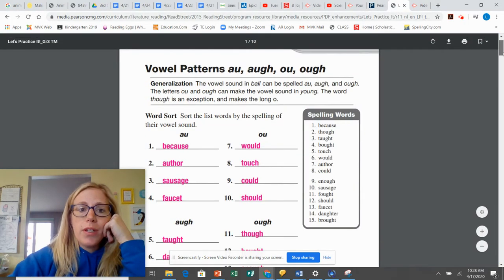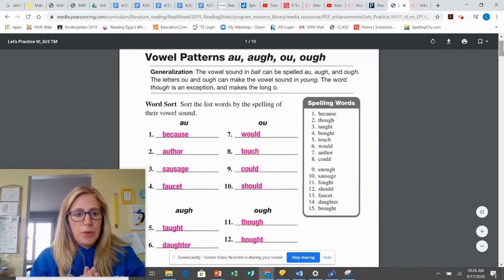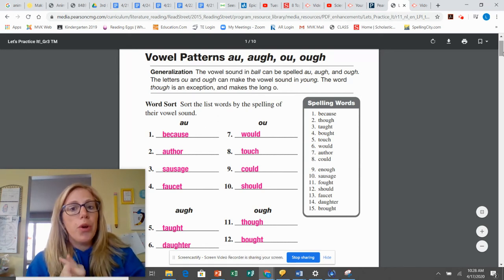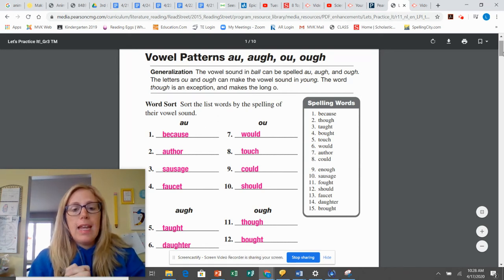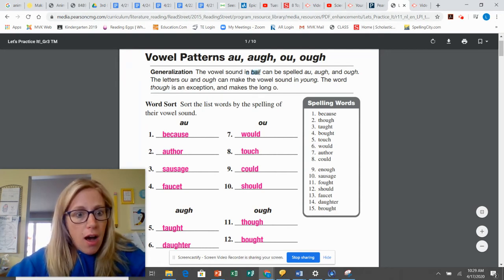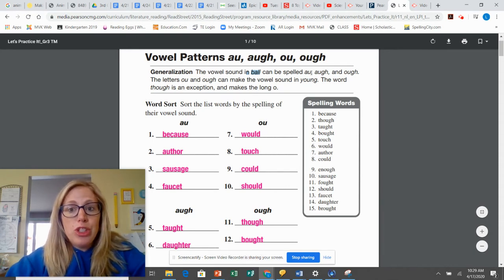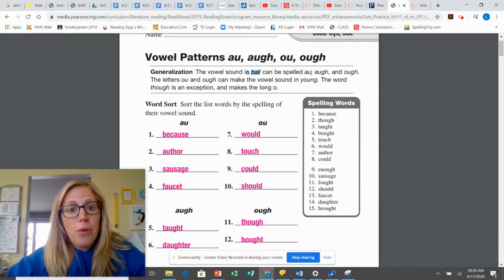So these are the words this week. We have a certain vowel pattern. They either use AU by itself, AUGH, OU, or OUGH. Now, if we look right here, it says the vowel sound in ball, so aw, can be spelled AU, AUGH, or OUGH.